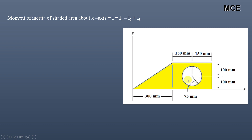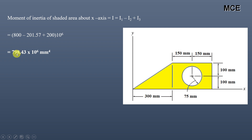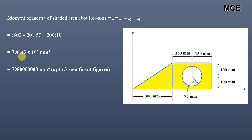Substituting the values: 800 − 201.57 + 200, all multiplied by 10⁶, which equals 798.43 × 10⁶ mm⁴. Rounded to three significant figures, the moment of inertia of the composite shape about the x-axis is 798 × 10⁶ mm⁴.